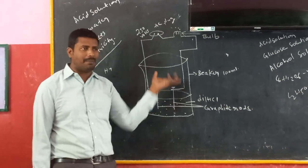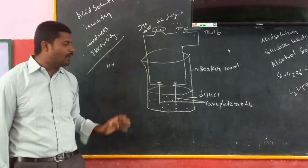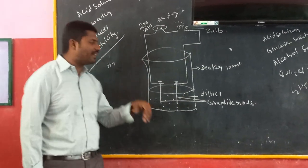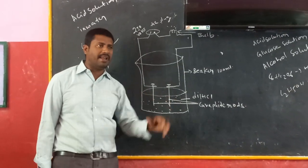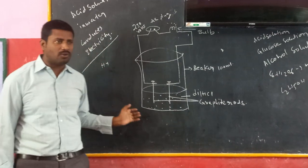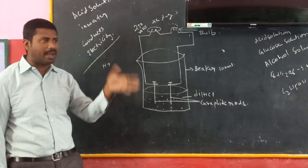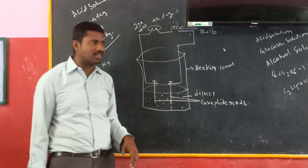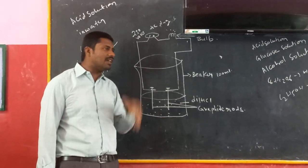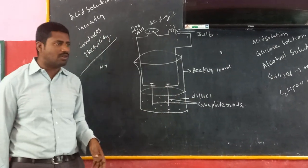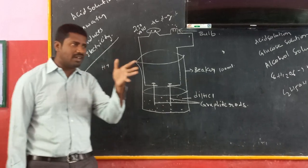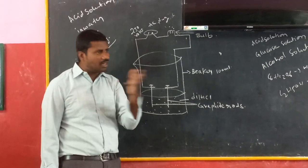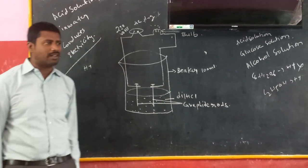As a result, the bulb did not glow. Then we replace the glucose solution with alcoholic solution. Even in the alcoholic solution, it did not produce H+ ions.